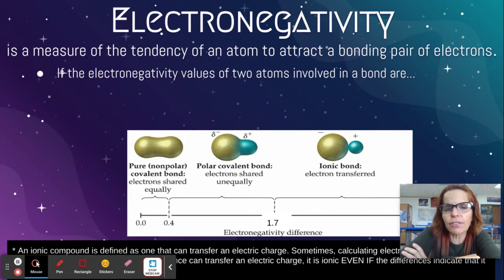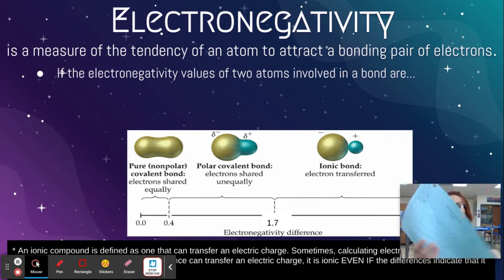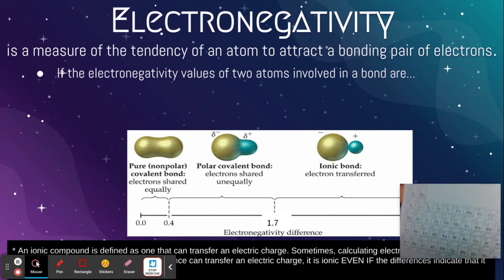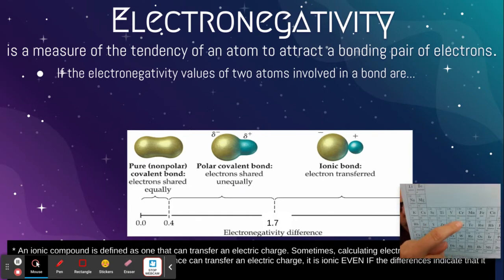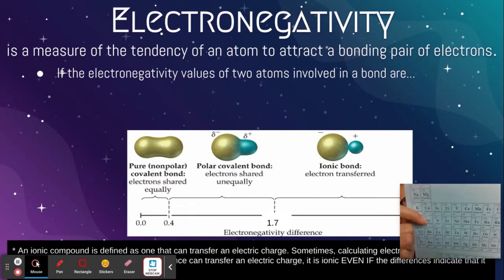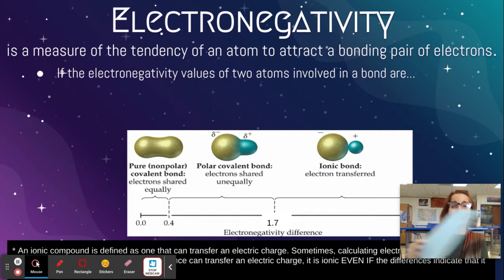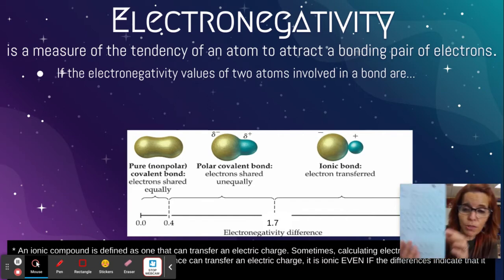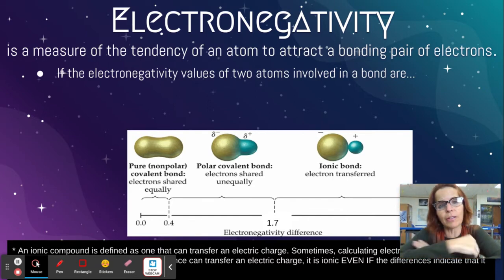If the electronegativity values of two atoms involved in a bond — you need to look at this table. If I pull it up close, let's look at chromium for just a second. Chromium has an atomic number of 24, and that's how many protons it has. Right here it's got its electronegativity value — I think it says 1.56. So you're going to find two atoms and their electronegativity numbers, and then you subtract them.